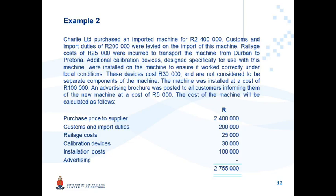All the costs incurred would be included in the cost price except for the advertising brochure. Advertising the machine has nothing to do with getting the asset ready for its intended use. Therefore, calculating the cost price includes all costs except the advertising expense.